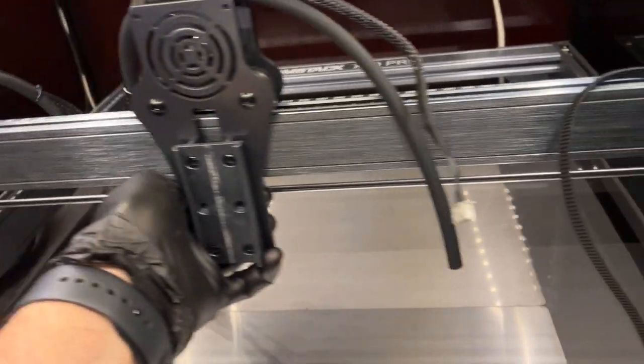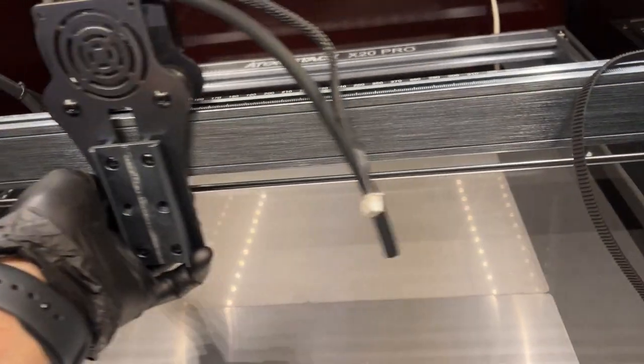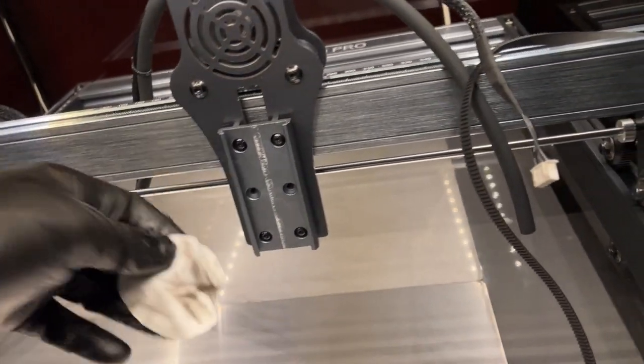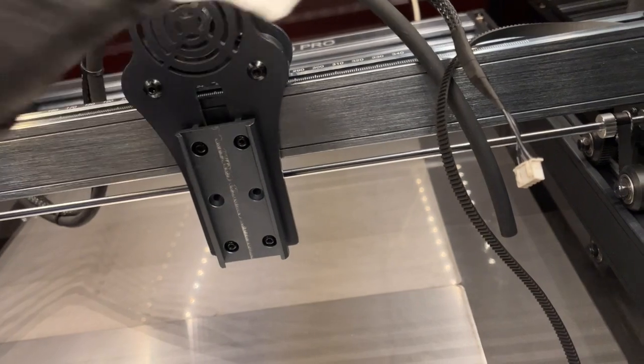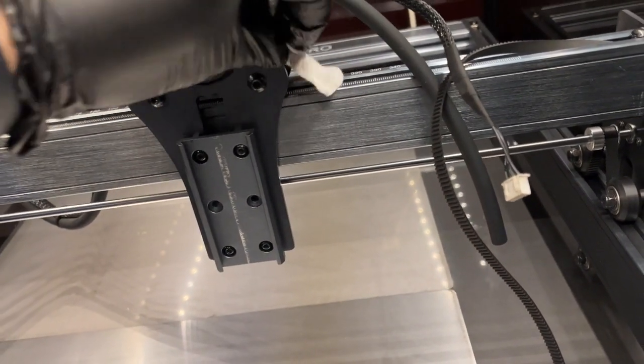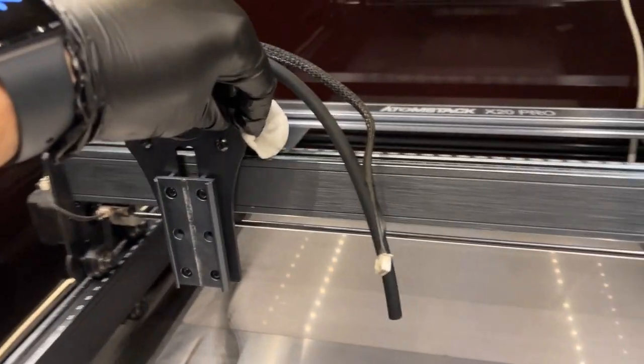Do not forget to clean the rails and the edges, especially where the wheels move along. This will help improve the wheel's traction and reduce the carriage friction when moving on the rail.